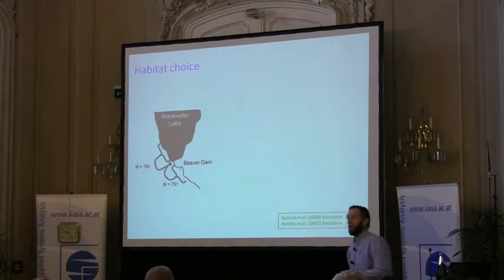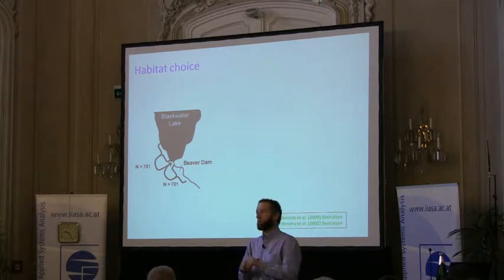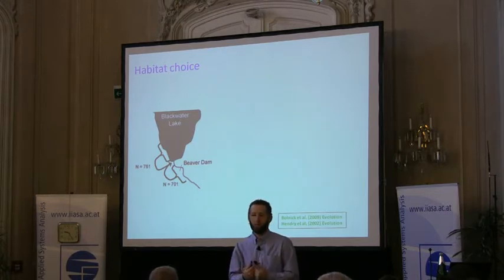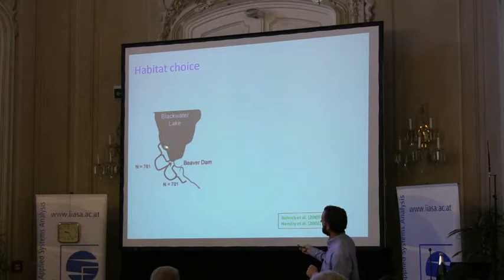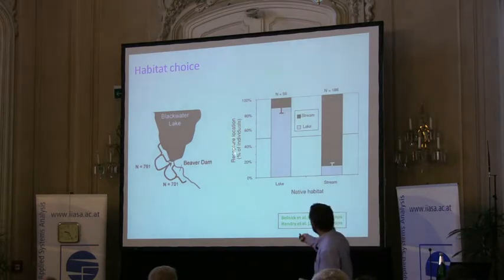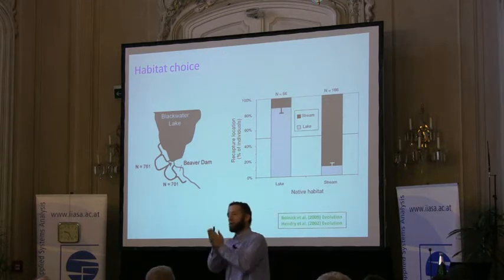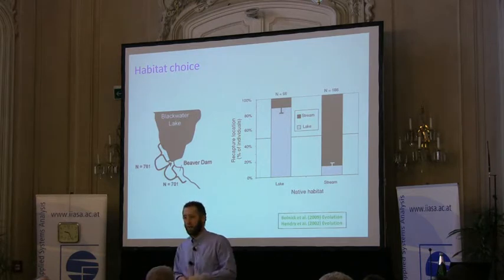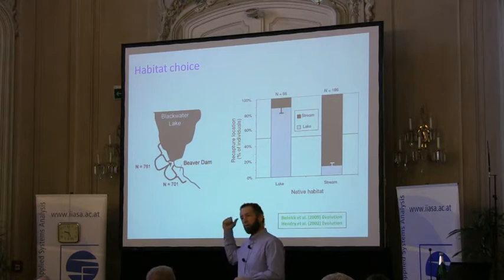For habitat choice, Dan Bolnick did much better work in another system. He took 761 lake fish and 701 stream fish, released them at the junction between lake and stream, and recaptured them to see who went where. In the lake there were almost entirely lake fish, and in the stream almost entirely stream fish. Fish with prior experience of their home environments returned to those environments when released at the junction - suggesting habitat choice as a reproductive barrier, though we don't yet have a full reciprocal design for the Misty system.